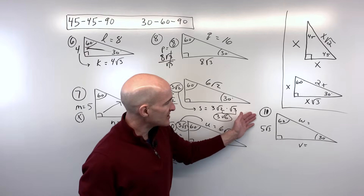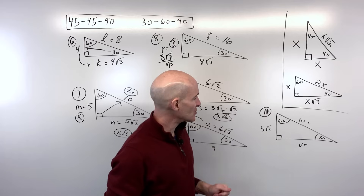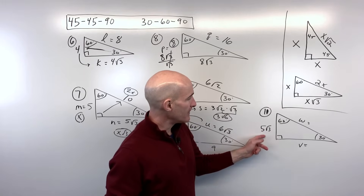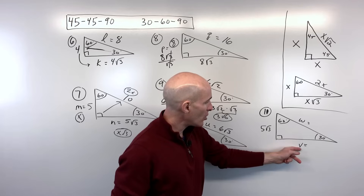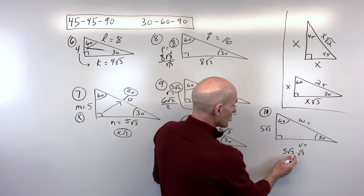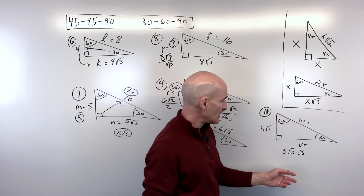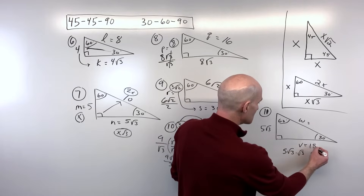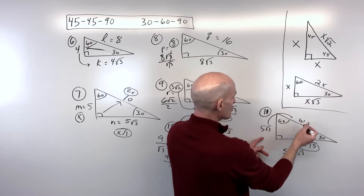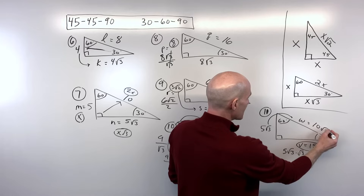For the last example before the theory section, they're giving us the shorter leg. To get the longer leg, multiply by √3: √3 times √3 is √9, which is 3, times 5 gives 15. To get the hypotenuse, double the shorter leg: 5√3 times 2 is 10√3.